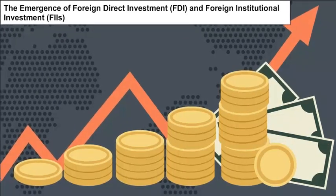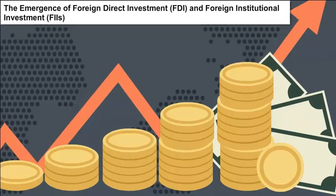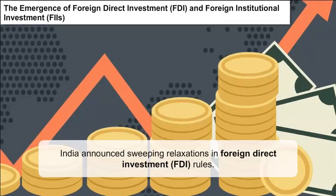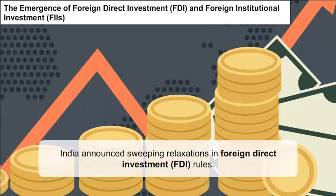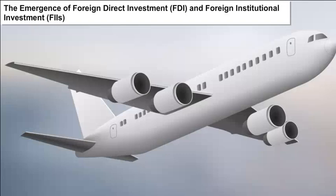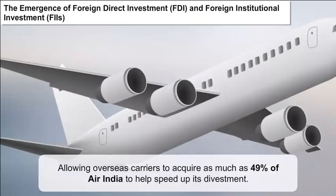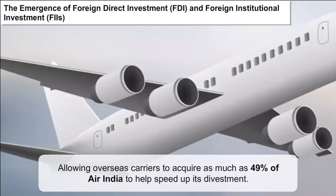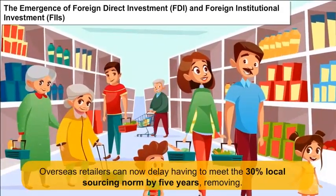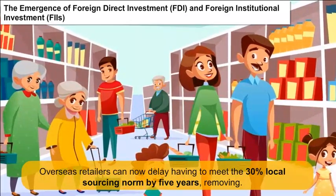Indian Economy during Reform – The Emergence of FDI and FII: India announced sweeping relaxations in Foreign Direct Investment (FDI) rules in single brand retail and other areas, besides allowing overseas carriers to acquire as much as 49% of Air India to help speed up its divestment. Overseas retailers can now delay having to meet the 30% local sourcing norms by 5 years.